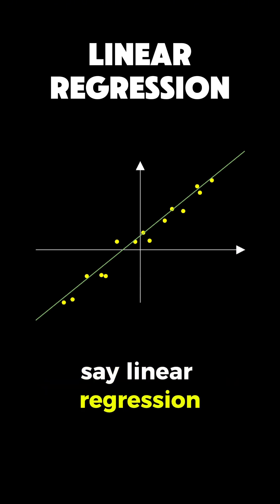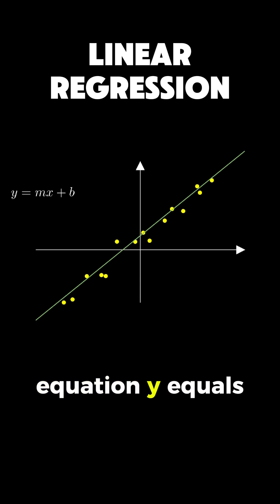When we say linear regression, we're talking about finding a straight line, described by the equation y equals m times x plus b, where m is the slope and b is where the line crosses the y-axis.